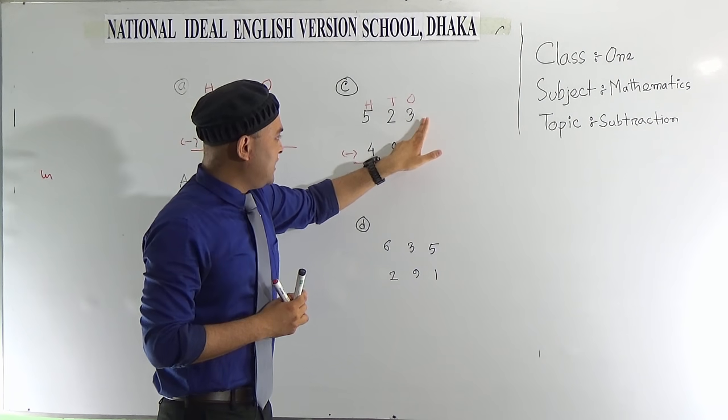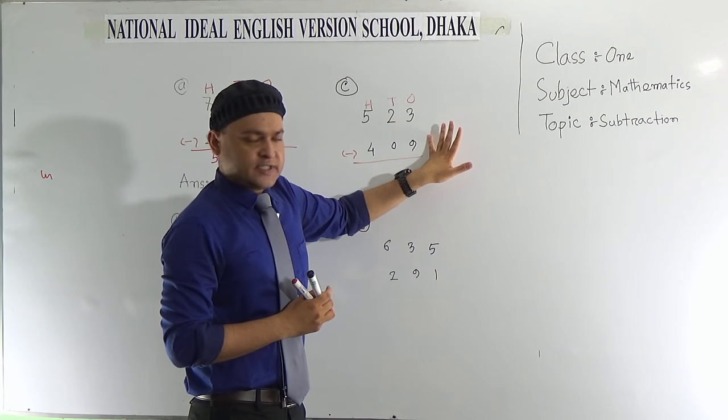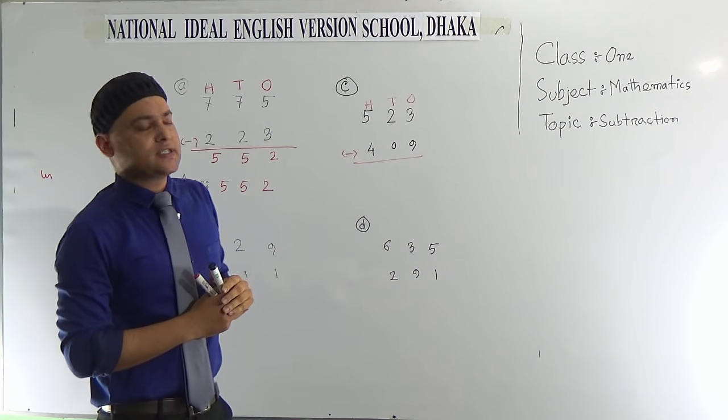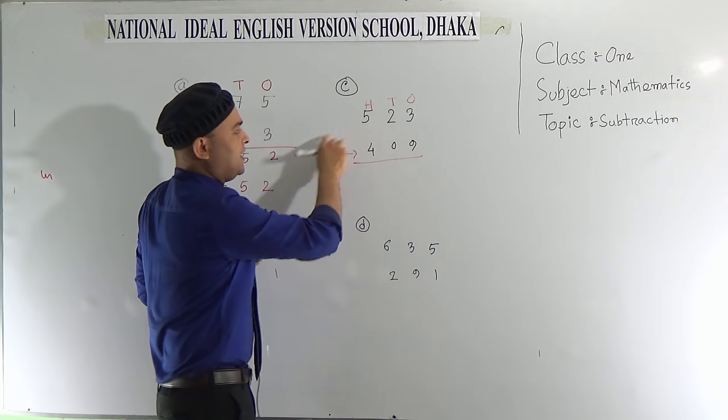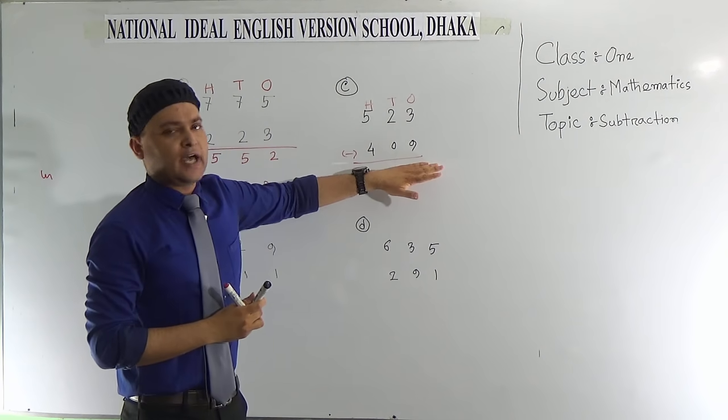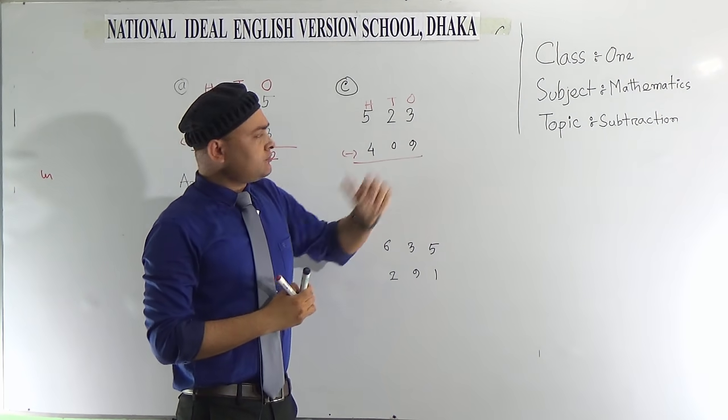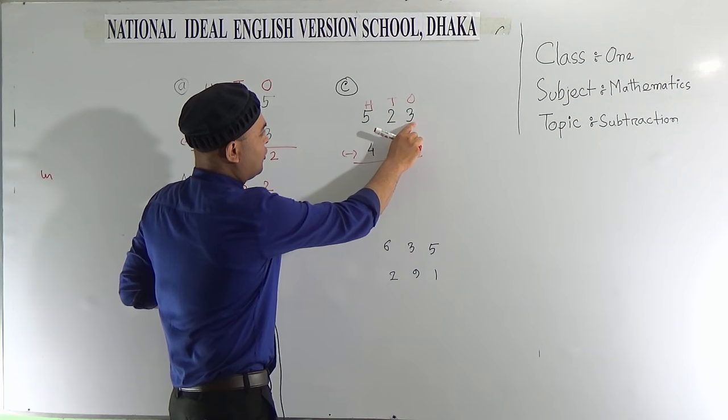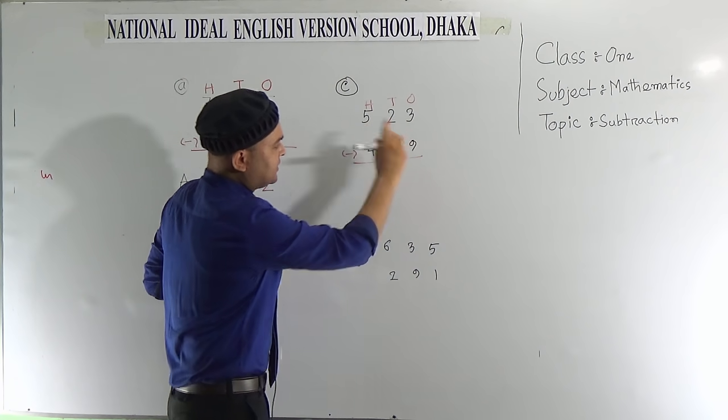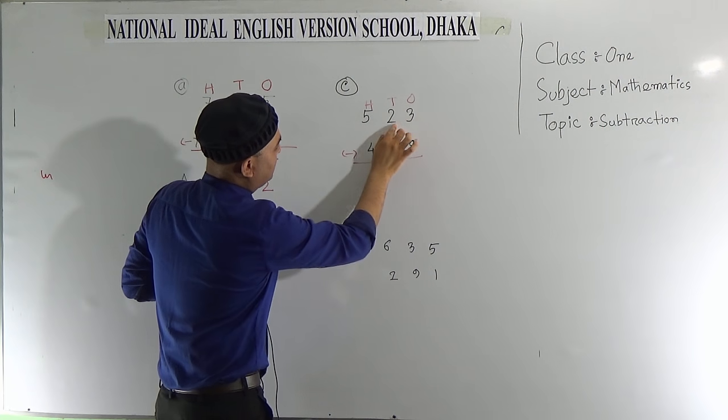So did we make some mistake? Obviously not. This is not a mistake because total 523 is bigger than 409, but sometimes this case will happen. So what is the solution? This is 3, which is smaller than 9, then we can borrow 1 from the 10's column.